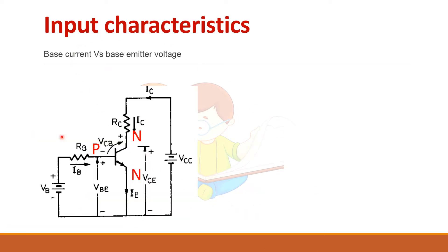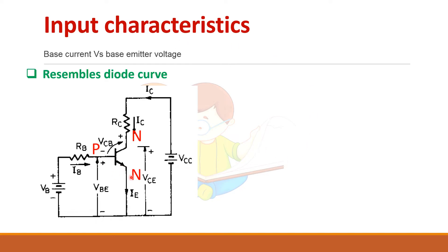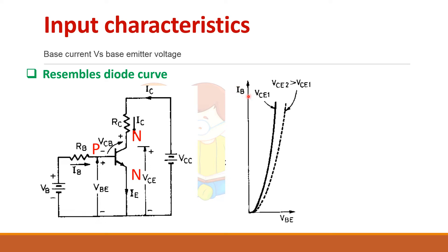Now let us look at the input characteristics. Input characteristics means drawing a graph between the input parameters — the base current and the base-emitter voltage for an NPN transistor. This is basically a P-N junction, so the curve resembles a diode curve.